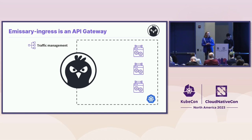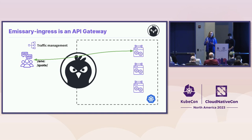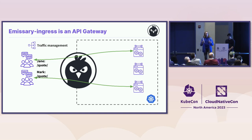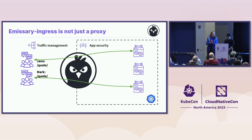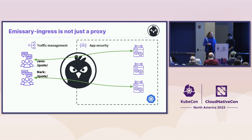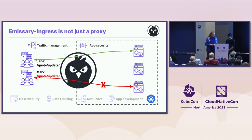One of the core functions of an API gateway is traffic management. If you have a user named Jane out in the world who wants to make a request to a slash-quote slash endpoint, Emissary can allow that and route it through to some microservice in the cluster. If another user named Mark requests exactly the same thing, the same thing will happen — it might go to a different instance of that workload. Traffic management is not the only thing that goes on with API gateways — this is one of the differences between an API gateway and a simple proxy. You can also do things like restricting Jane to update quotes while blocking Mark from doing so. Observability, rate limiting, resilience, and helping app development are all part of it.